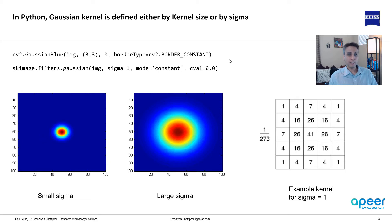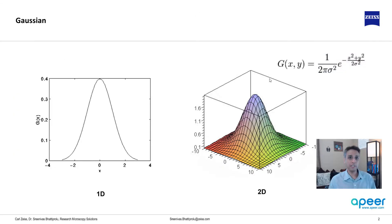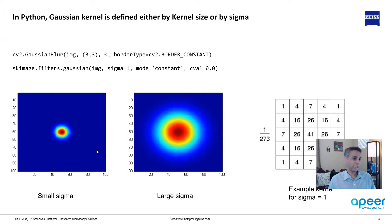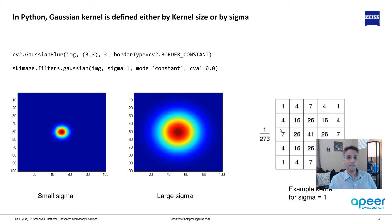What does sigma mean? In the equation, changing sigma affects the shape of the Gaussian — a small sigma means everything is tight, a large sigma means everything is broad. You're changing the variance, the spread of the distribution.